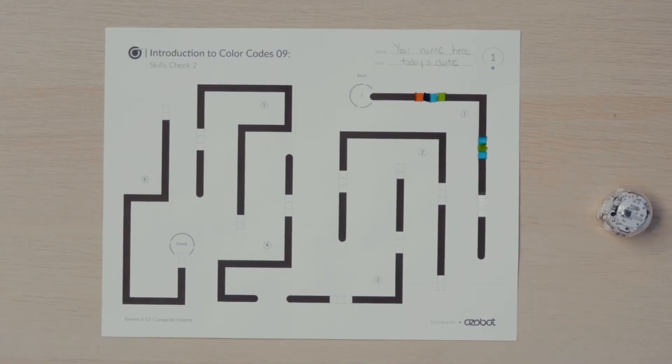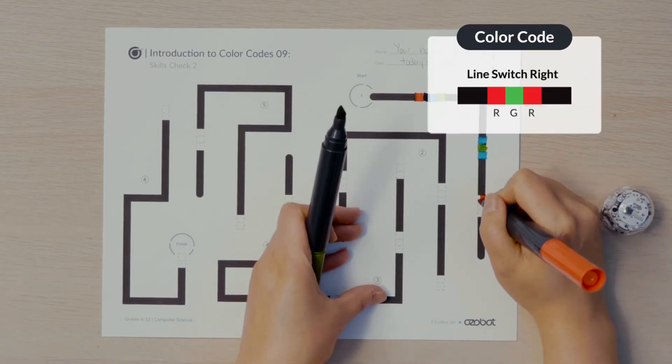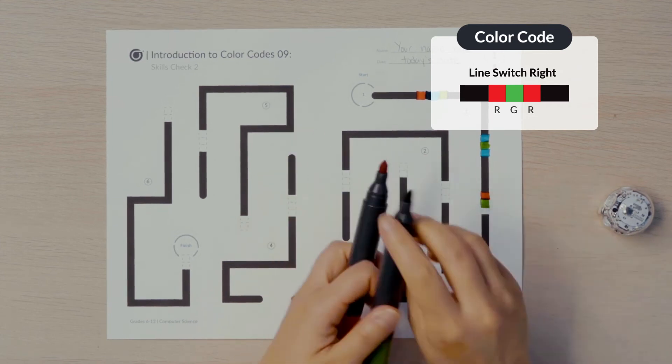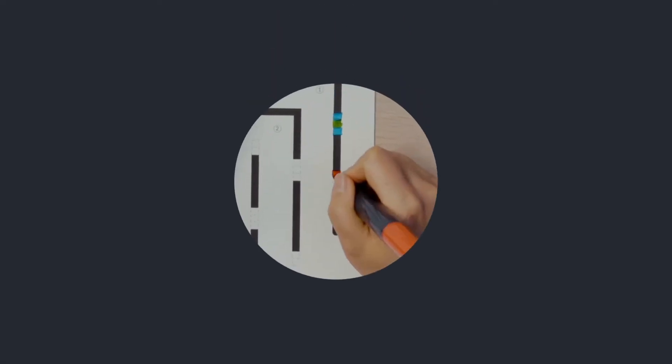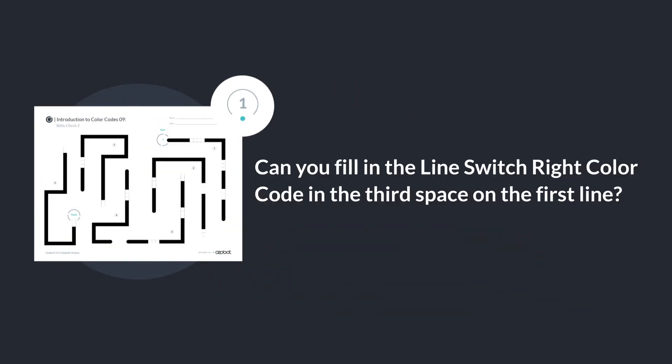The third color code space on the first line segment is for a line switch code. What direction will your bot need to go to get to the next line segment? The bot will need to go right, so I'll fill in a line switch right code. Can you fill in the line switch right color code in the third space on the first line?